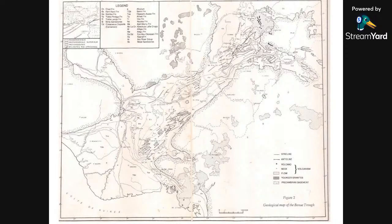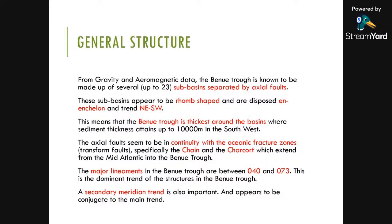This map shows the general extent of the Benue Trough. From gravity and aeromagnetic data — since most of the Benue Trough is covered by sediment — we can see that the Benue Trough is not one continuous basin but is made up of several sub-basins, up to 23, separated by axial highs. These sub-basins appear to be rhomb-shaped and are disposed en échelon in the northeast-southwest direction. Thickness can reach up to 10,000 meters, especially towards the southwest where the Anambra and Niger Delta basins are located.